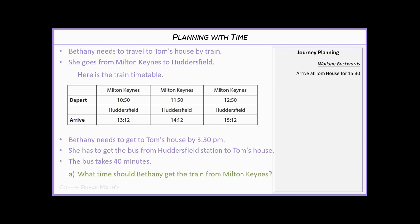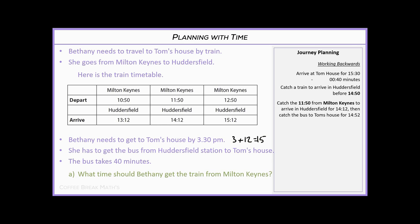Working backwards: we need to arrive at Tom's house by 3:30, which in 24-hour clock is 15:30 (3 plus 12 equals 15). We subtract 40 minutes, giving us 14:50 — so we need a train arriving in Huddersfield before 14:50. That would be the 11:50 from Milton Keynes, arriving at 14:12. Catching the bus immediately puts you at Tom's house around 14:52 — plenty of time.